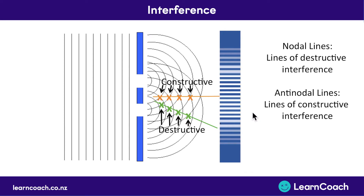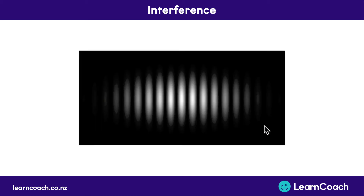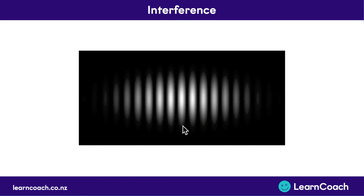If you actually shone light through two slits, this is what it would look like — this is a photo. You see a whole series of lines. These bright spots are where the light has been constructively interfering, meaning we have antinodal lines of constructive interference. Between each of these bright spots, we have dark patches where there is no light at all. Even though the light is diffracting, it's been cancelled out by opposite wavelengths of light — destructive interference, or nodal lines. The light has been cancelled out, and the areas where light does exist are much brighter due to constructive interference.